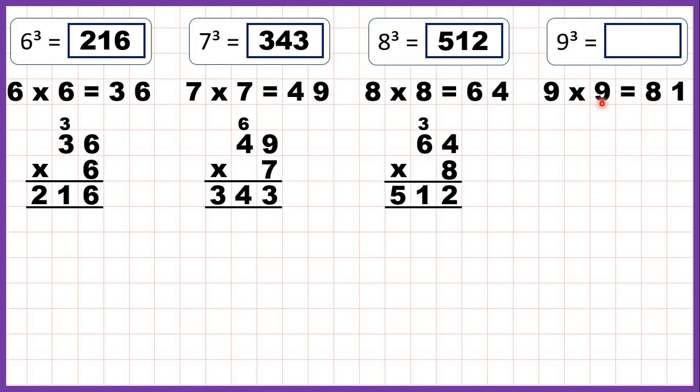Now 9 cubed: we start with 9 times 9 which is 81, then take that 81 and multiply it by 9 again. 1 times 9 is 9, and 8 times 9 is 72, so 9 cubed is 729.